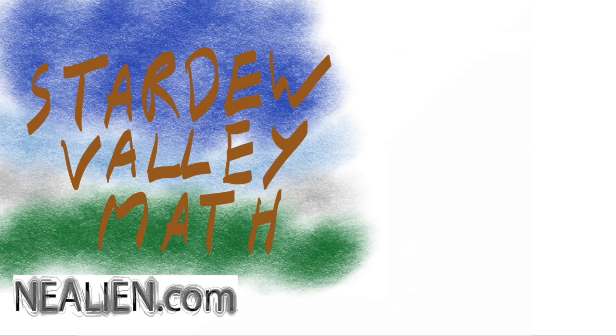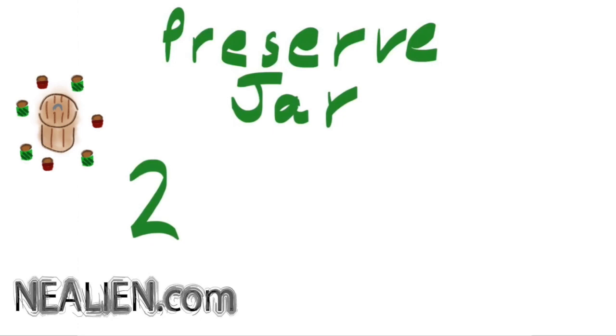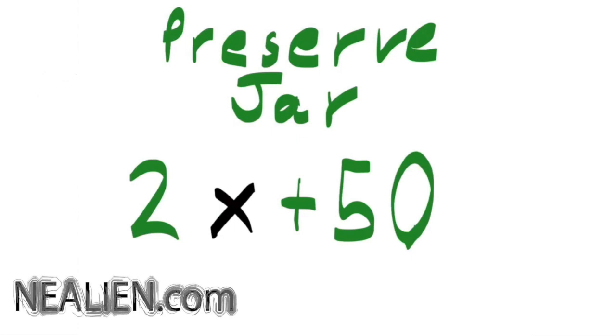The preserve jar is pretty simple. It has one equation. The equation for the preserve jar is 2 times x plus 50. So that means x is the base price of the fruit or vegetable, and you multiply that by 2 then add 50. So potentially even if something had a value of 0, you would still get 50 because 0 times 2 plus 50 is 50.